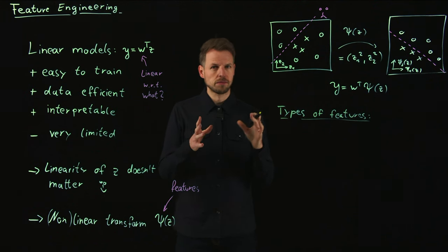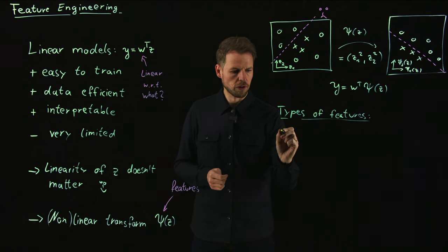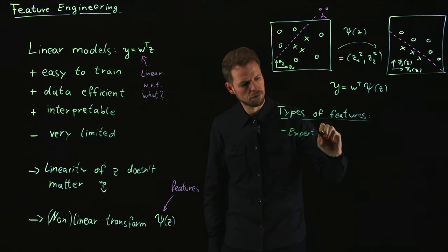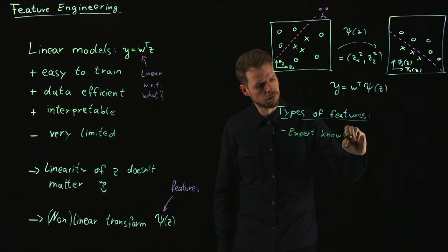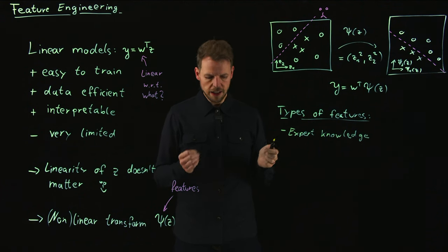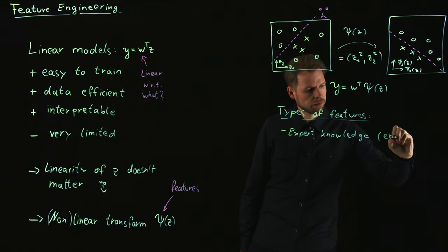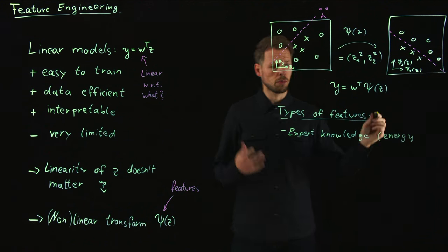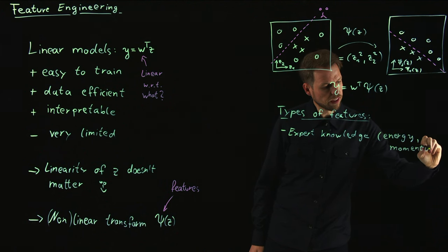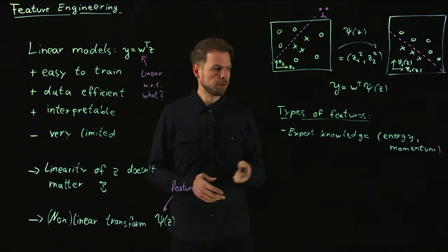The easiest thing, if you have system knowledge, is to use expert knowledge. If an engineer has been working on a system their entire life, then maybe they know what to use. You can use features like the energy of a system, the momentum of a system, and so all sorts of quantities that the expert knows matters to identifying the system or to identifying important relationships.